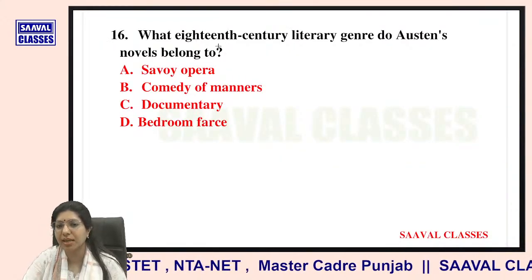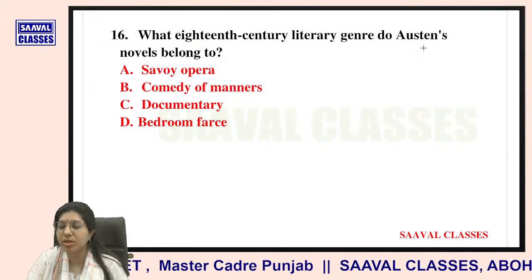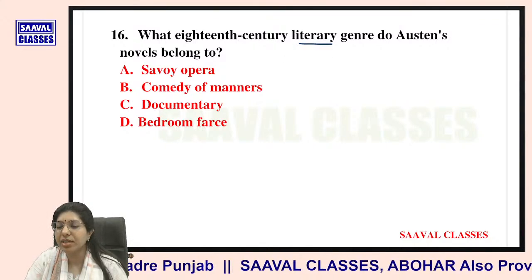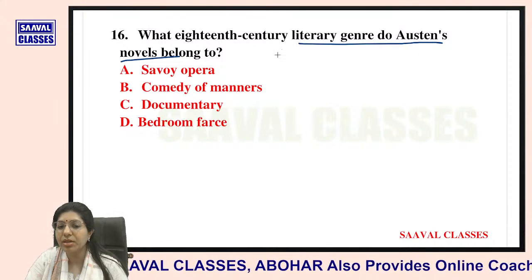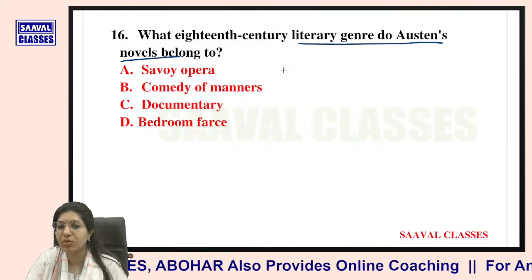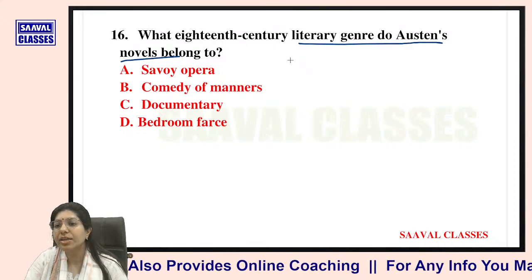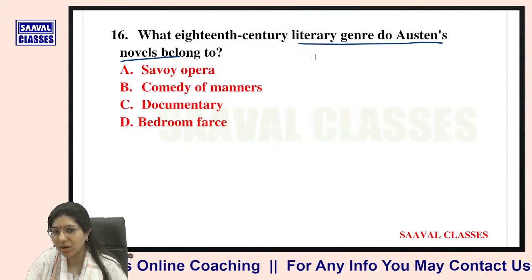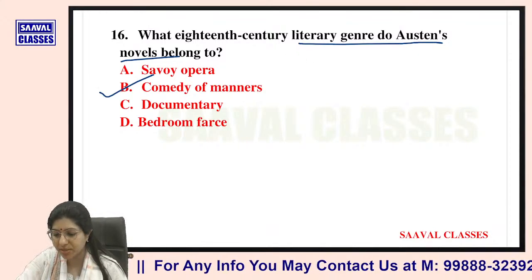Question number sixteen: What 18th century literary genre do Austen's novels belong to? Options are ballad opera, comedy of manners, documentary, or bedroom farce. They belong to comedy of manners — very right.